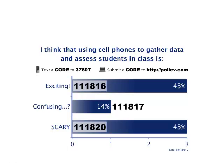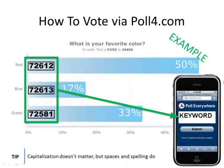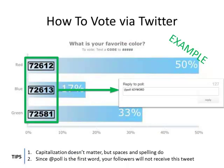When you download a poll from Poll Everywhere, you automatically will get a set of instruction slides that include examples on how to vote via texting, where you text the code, via poll4.com online, or using Twitter. I found that once students have seen these slides once and participated in a poll or two, they've got the hang of it, and there's no need to repeatedly show these slides in class.